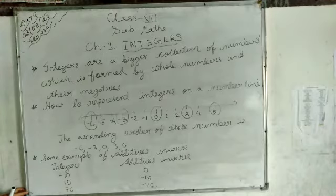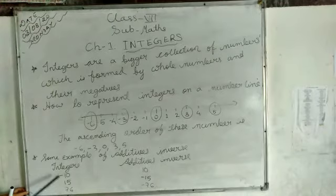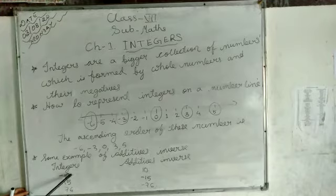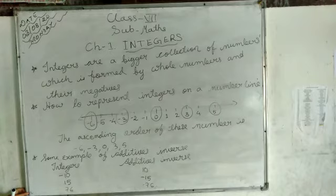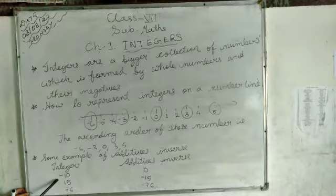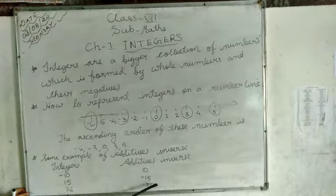Next, some examples of additive inverse. These are the integers: minus 10, 15, and 76. The additive inverse of minus 10 is 10, of 15 is minus 15, and of 76 is minus 76. That means if here it is negative, then here it will be positive. If here it is positive, then here it will be negative.